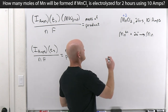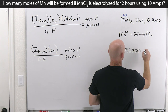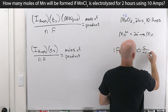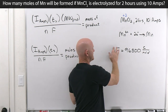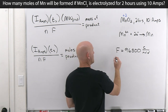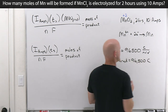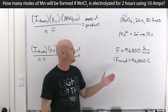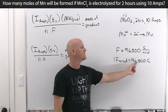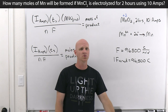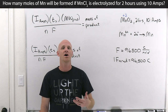We need to talk about Faraday's constant. One Faraday equals 96,500 coulombs per mole of electrons. More precisely, one Farad is the charge on one mole of electrons — 96,500 coulombs. Coulombs are the SI unit for charge, and Faraday's constant gives you exactly the amount of charge on a mole of electrons.